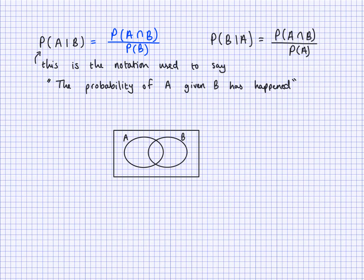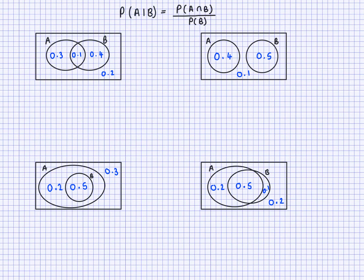So this is the formula for conditional probability. This is how we write it, and we read it as the probability of A given B. This line is the notation to denote A given B. I want to give you some abstract examples so you can understand it, and you also need to be able to think about contextual examples and interpret them in conditional probability.